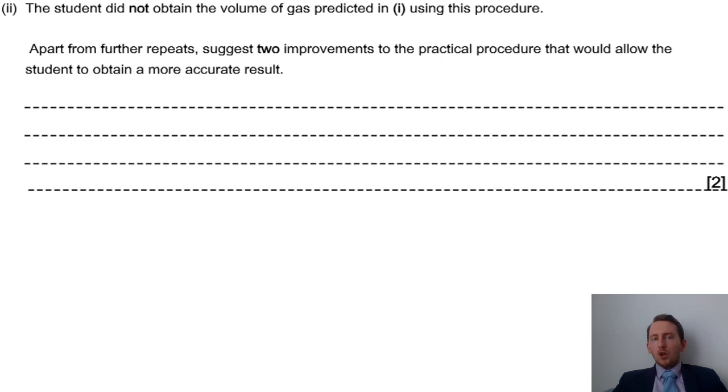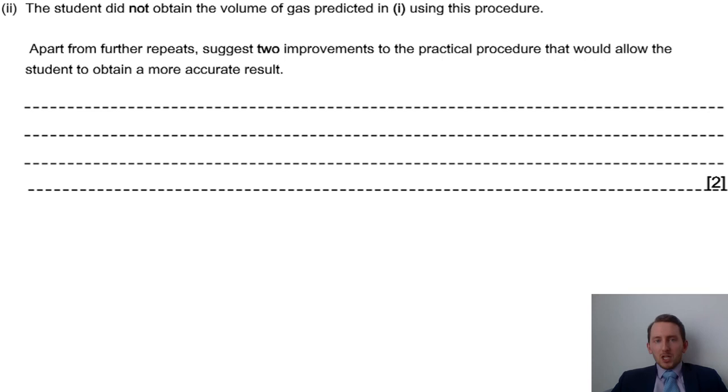Final question: student did not obtain the volume of gas predicted in the first part. Apart from repeating, what improvements could we have in this practical procedure to get more accurate results? Again, practical-based question. Do you know practicals, you know how to improve them. For this one, two marks, we're looking for something such as heat until the syringe stops moving to make sure that reaction has come to completion, and also then waiting it to cool before you measure your final volume. A couple things there to improve on that one. Okay, so that'll do for our questions today. See you next time.